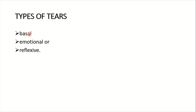Basal tears are physiologically very important — they are responsible for the nourishment of the cornea as the eyes keep blinking. Emotional tears are produced during extreme sorrow, happiness, joy, or pain, also known as crying or weeping. Reflexive tears are produced when a foreign body such as a dust particle or insect enters the eye.